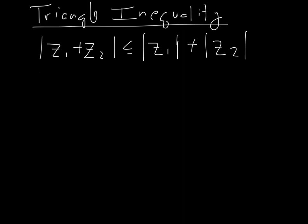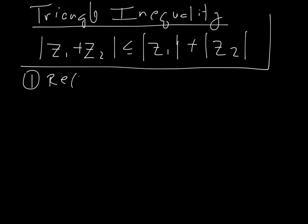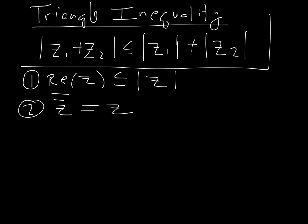First, I want to note a few facts that we'll use. The first one is that the real part of any complex number is always less than or equal to the absolute value of that number — we'll use that fact in the proof. The second thing is that if I take the conjugate twice, I get back to my original complex number. The first was proved in class and the second is one of your homework assignments.